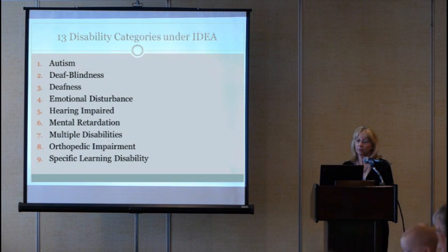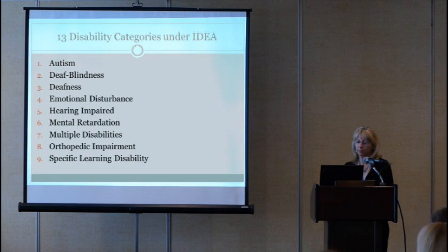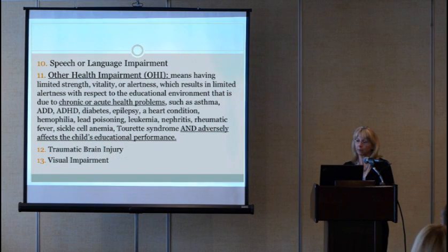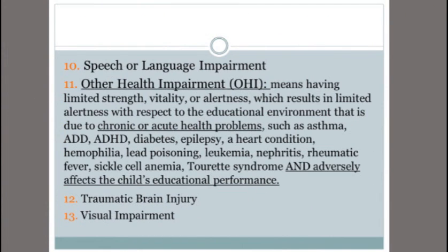The 13 disability categories under IDEA are: autism, deaf-blindness, deafness, emotional disturbance, hearing impairment, mental retardation, multiple disabilities, orthopedic impairment, specific learning disabilities, speech or language impairment. And this is where a lot of the pulmonary patients I see fall — the OHI, or other health impairment. That means having limited strength, vitality, or alertness, which results in limited alertness with respect to the educational environment.